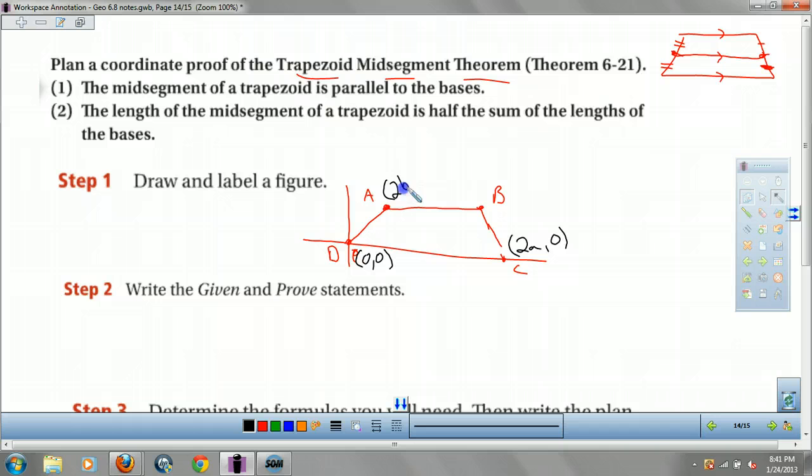So I'm going to call this one 2b, 2c. Now b, I go over, I can make to anything I want, 2d. But now I go up 2c, that's the same, right?